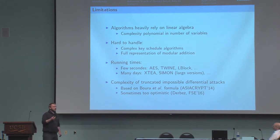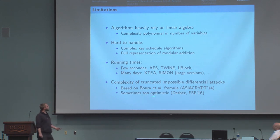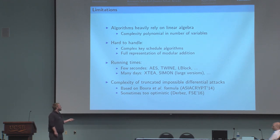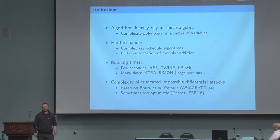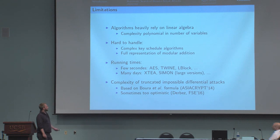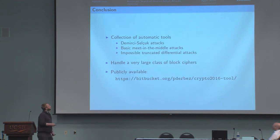There is also an issue in the way we compute the complexity of truncated impossible differential attacks. Basically, our tool outputs all the parameters needed by the formula of Boura et al. But sometimes, this formula is too optimistic and the real complexity of the attack can be a bit higher than what is given by the formula.